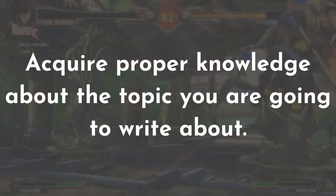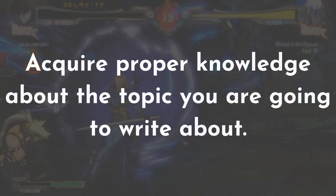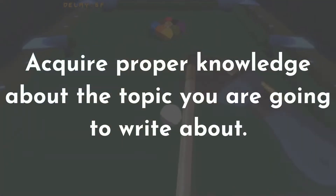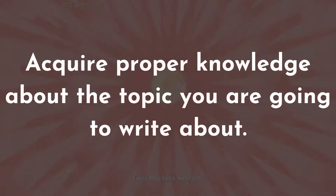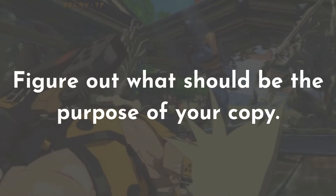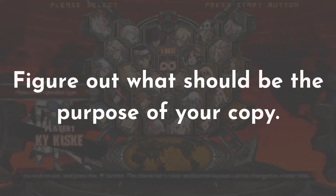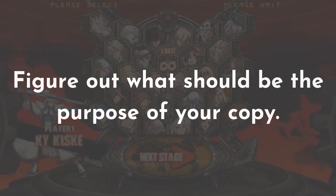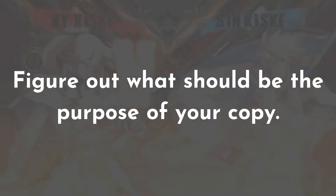Thirdly, acquire proper knowledge about the topic you are going to write about. Aside from the fact that you should know the product like the back of your hand, you need to precisely know all of the details that led you to the creation of this particular piece of content and how to accomplish said objectives. Fourthly, figure out what should be the purpose of your copy. You need to know exactly what you want to accomplish. In this case, you want to get new players as this is a UA campaign. If you want to do something else, you need to adjust your copy accordingly. Throwing a nice CTA into the copy will help in this case.